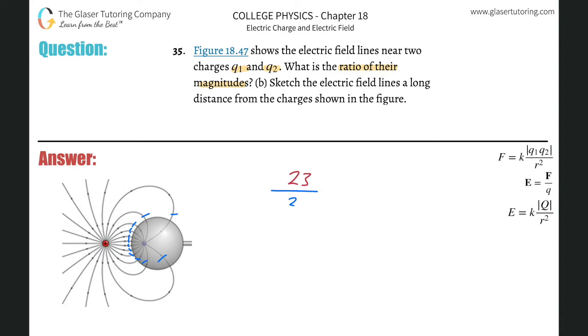So the ratio is 23 over 12 — or 12 over 23. It totally depends on how you want to frame the ratio. You can plug it into the calculator to get a decimal if you like, but that's basically it.